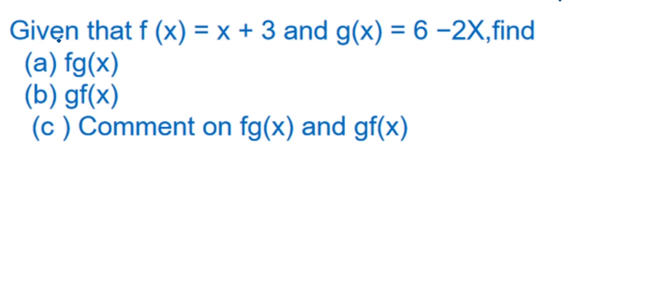Given that f(x) is equal to x plus 3 and g(x) is equal to 6 minus 2x, find part A, fg of x, then part B, gf of x. Part C, comment on fg(x) and gf of x.